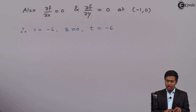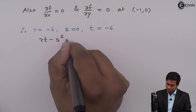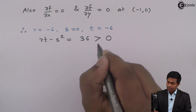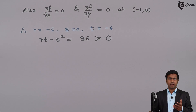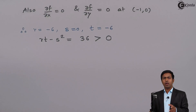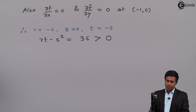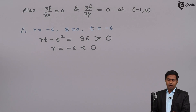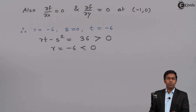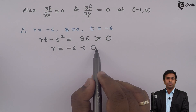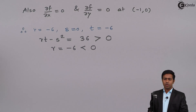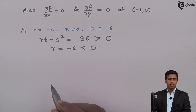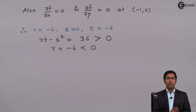Now we find the condition rt minus s squared. We get minus 6 times minus 6 minus 0 squared, which equals 36, and this is greater than 0. Whenever rt minus s squared is greater than 0, we have minima or maxima at that stationary point. Since r is minus 6, which is less than 0, we have a maximum. Therefore, minus 1 comma 0 is indeed a stationary value of the function z equal to x cube plus 3xy square minus 3x.